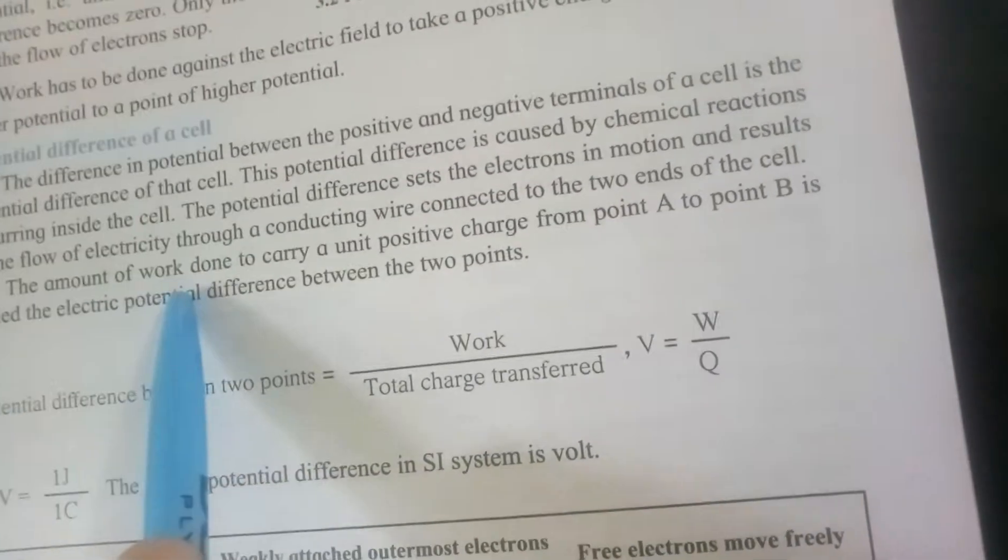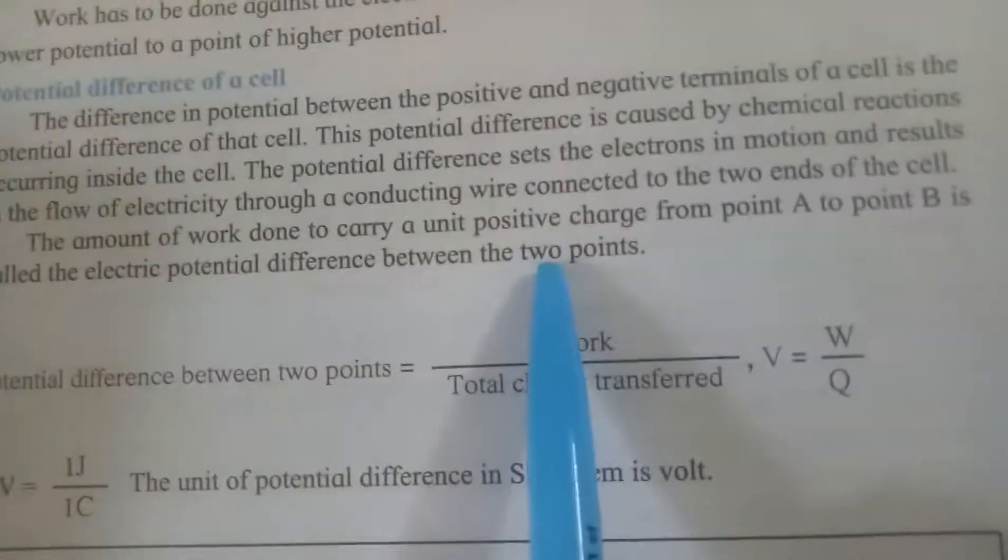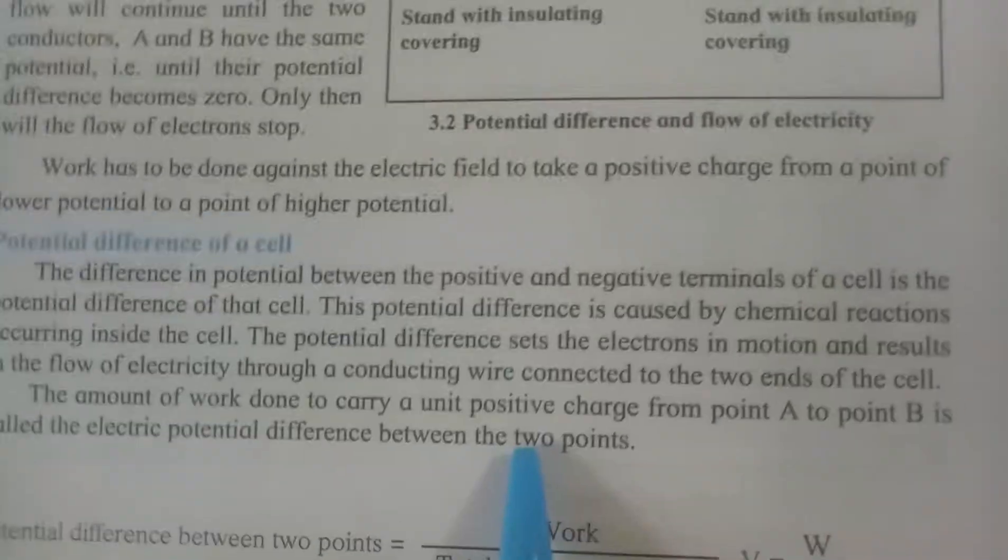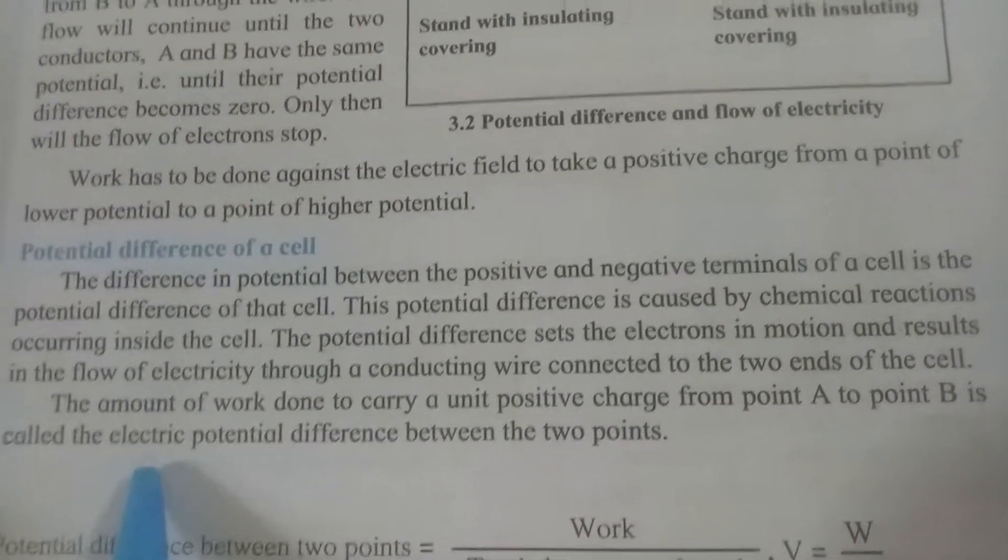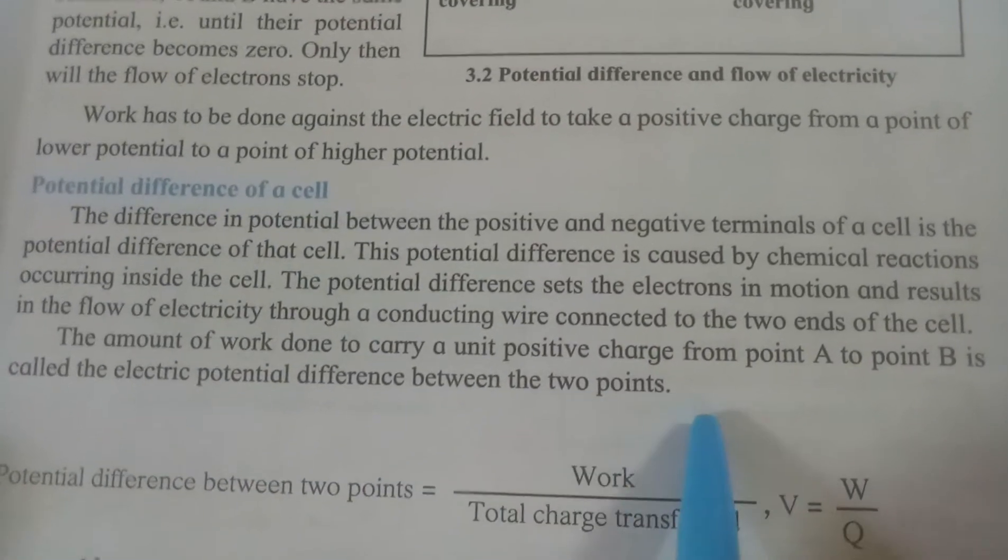The amount of work done to carry a positive unit charge from point A to B is called as an electric potential difference between the two points.